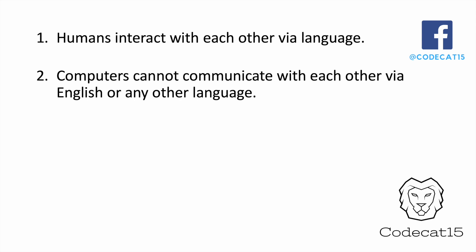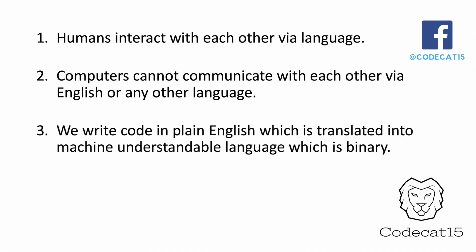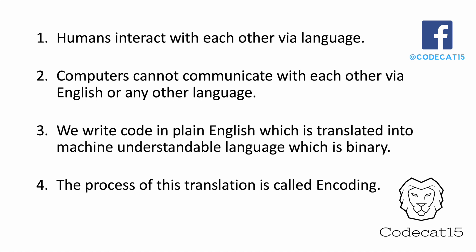All over the globe, computers understand only one thing: binary language, which is zeros and ones. So you code in English, but at the end of the day it gets translated into binary language. That translation is called encoding — you write code in textual English and it gets converted into a binary format. There are many different types of encoding, but this is one common type we do daily without realizing it.